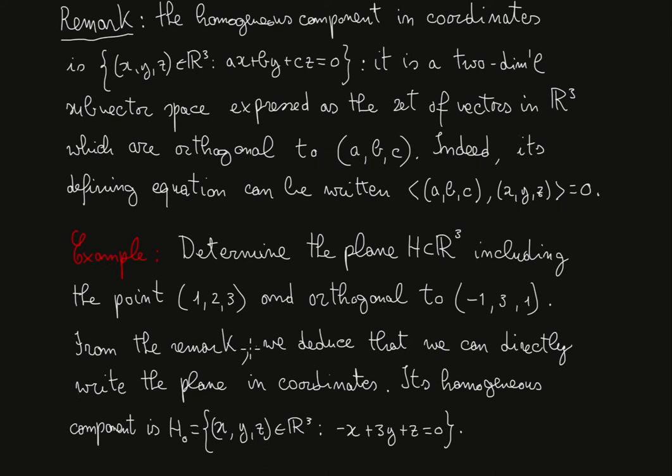From the remark, we deduced that we can directly write the plane in coordinates. Its homogeneous component is H₀ equals x, y, z in R³ such that the scalar product between this vector and the generic x, y, z of the plane must be zero. So the defining equation becomes -x + 3y + z equals zero.